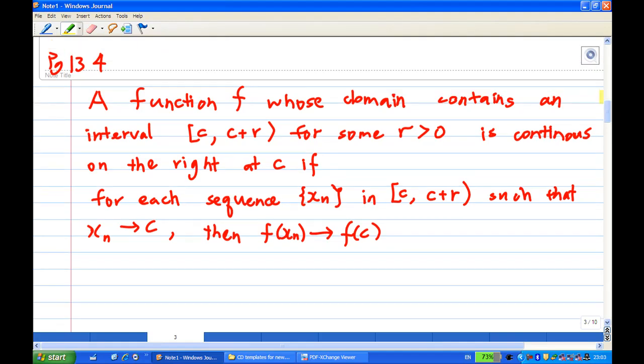According to the definition, the function whose domain contains an interval from c to c plus r, including c, for some positive number r. Now, if we say that the function is continuous on the right at c if for every sequence inside this interval, and xn converges to c, then f of xn converges to f of c. This is what we mean by continuous on the right at c.